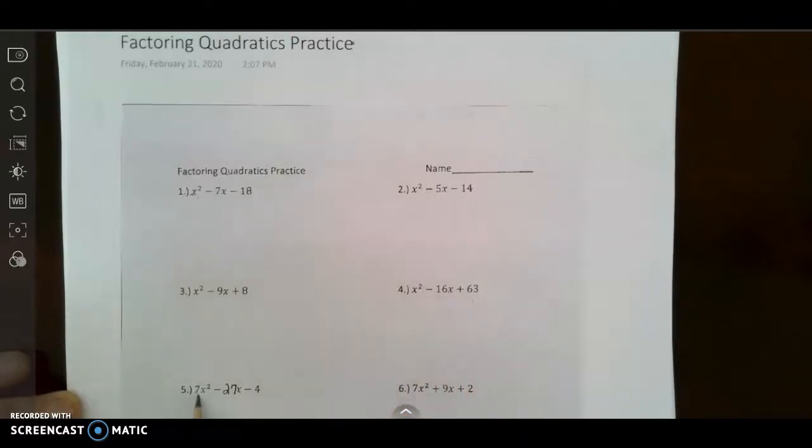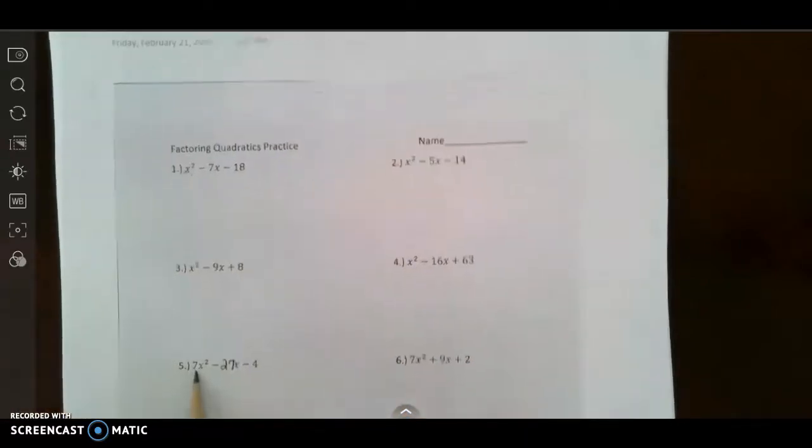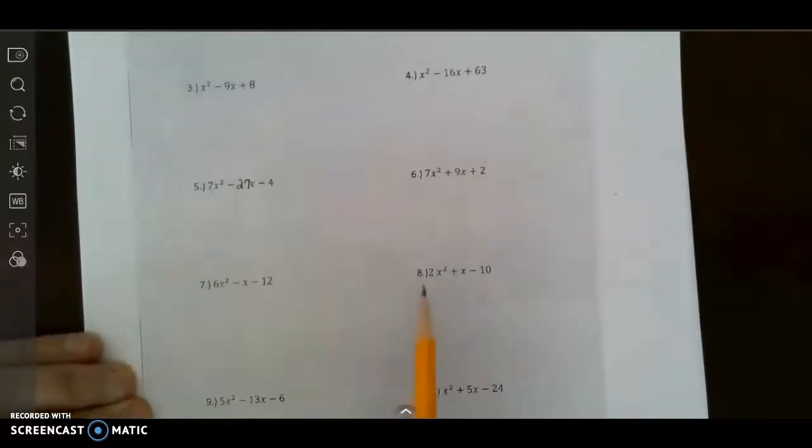Once you start having a leading coefficient that's not 1, like 7, 7, 6, 2, these are the ones where you're going to need slide and divide.